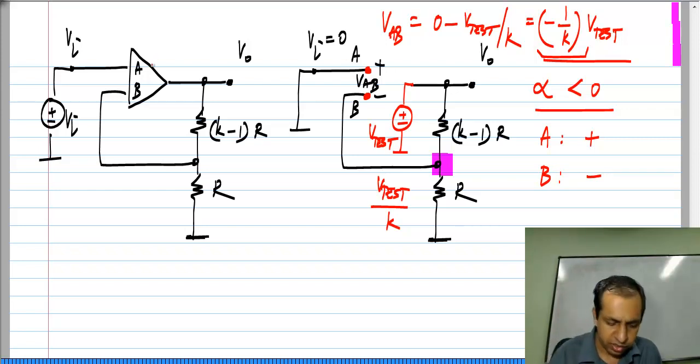In other words, I have to assign the signs like that and earlier I used those signs we know they are correct, but this is how we know they are correct by doing this analysis, because as you can see this V A B the input to the op amp is minus 1 by K times V test.